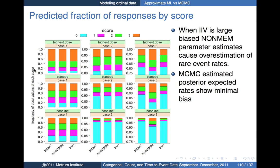This plot looks at what happens if you use these models to simulate outcomes, comparing simulated outcomes for estimated parameters relative to simulating directly from the true model. The y-axis shows fractions of outcomes at different score levels — zero, one, two, and three — displayed as stacked bar charts. Going up the panels: bottom is baseline simulations, middle is placebo simulations, and top is simulations of the highest dose outcomes.